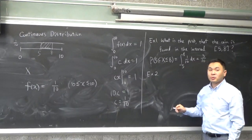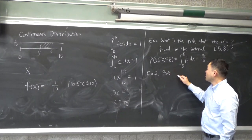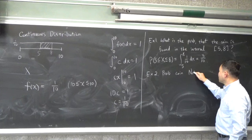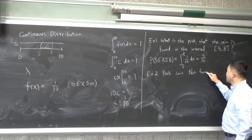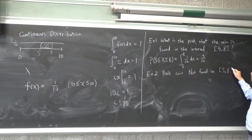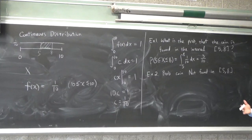So, second question. Probability of a coin not found in the interval of 5 to 8. What would that be? Would you just subtract that from 1? Yeah.